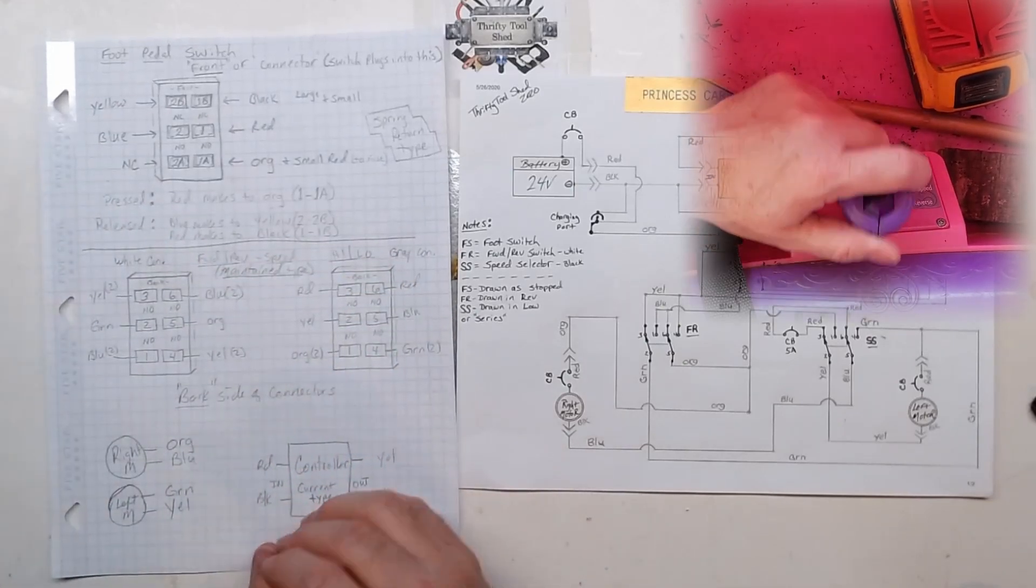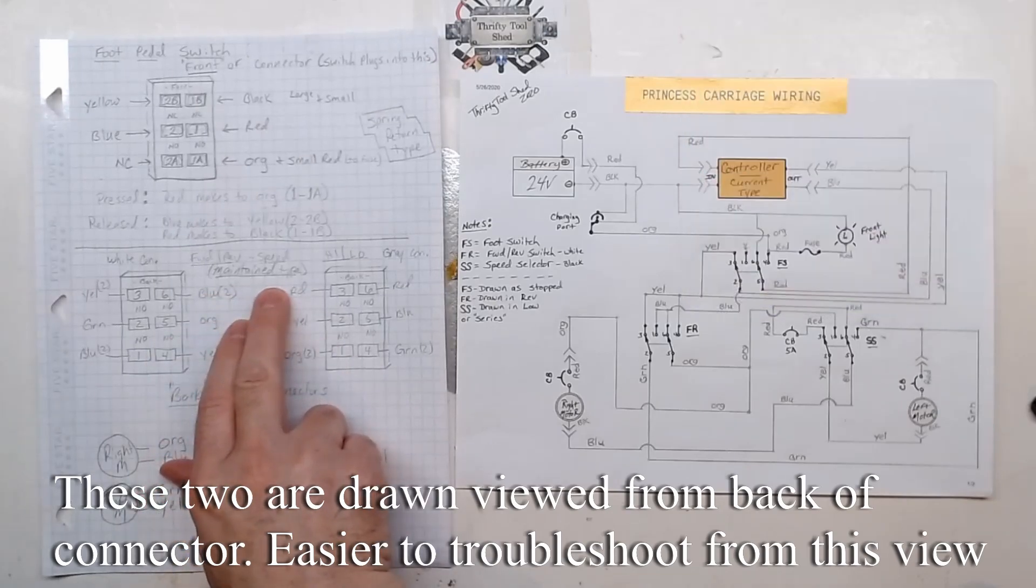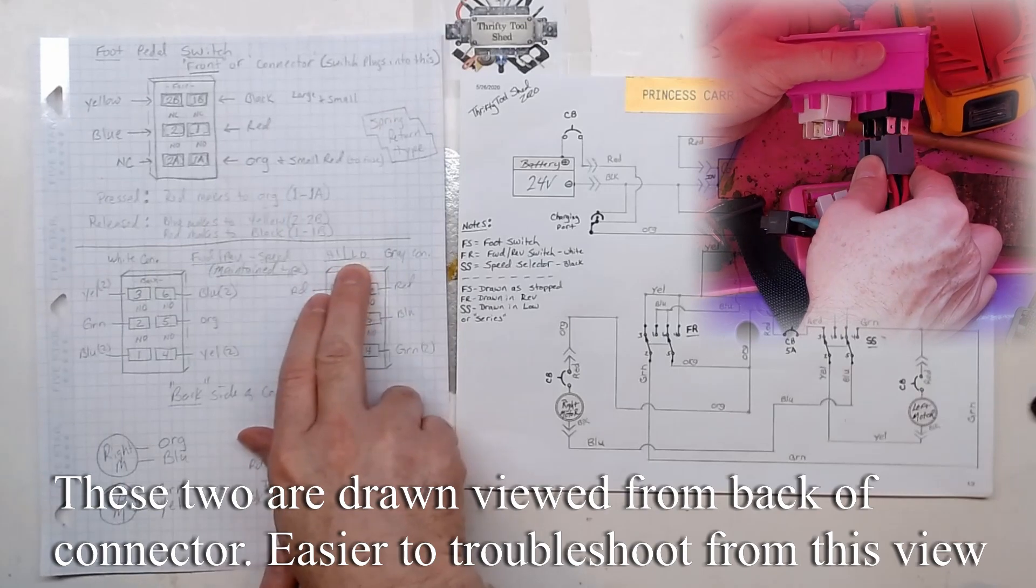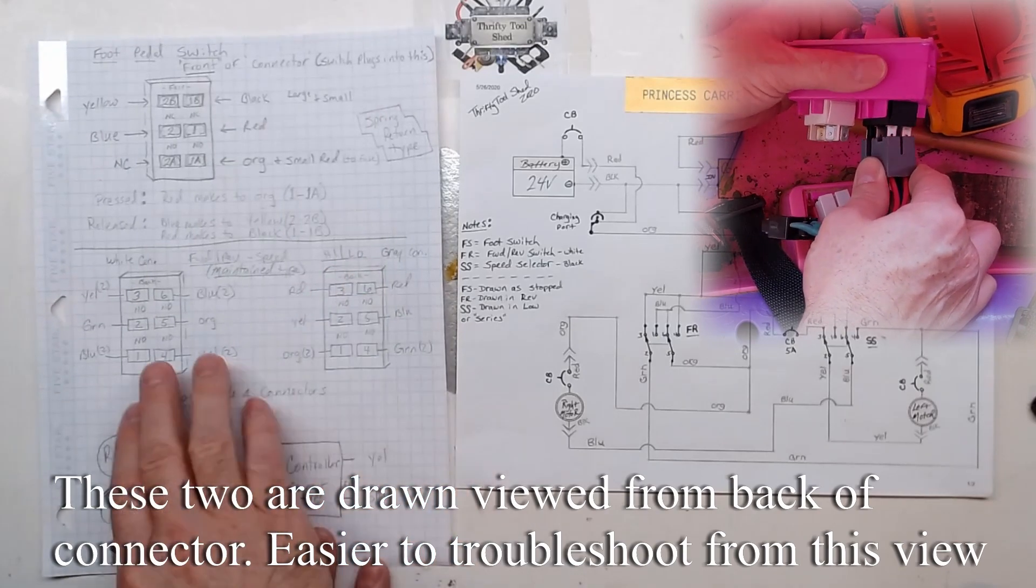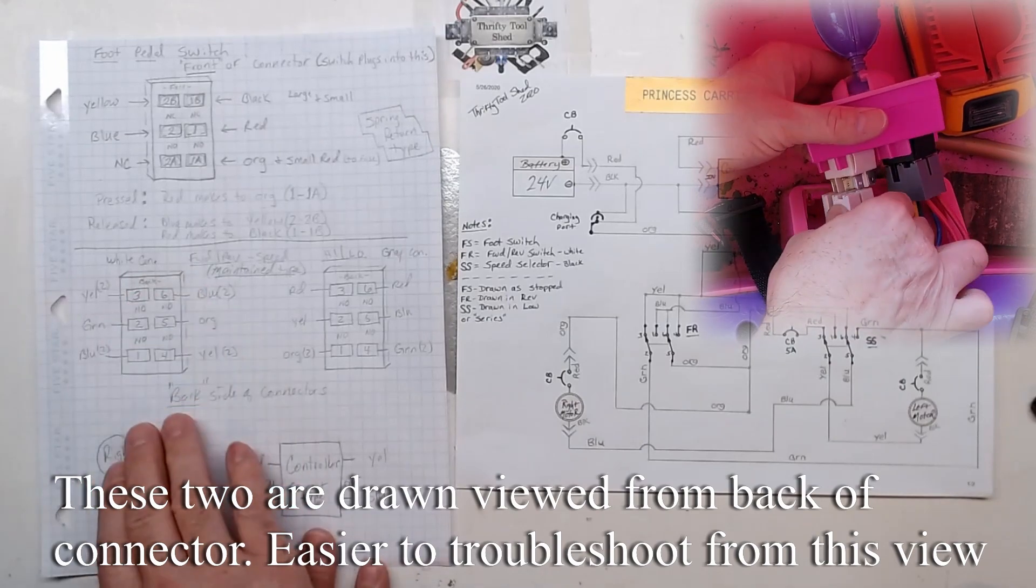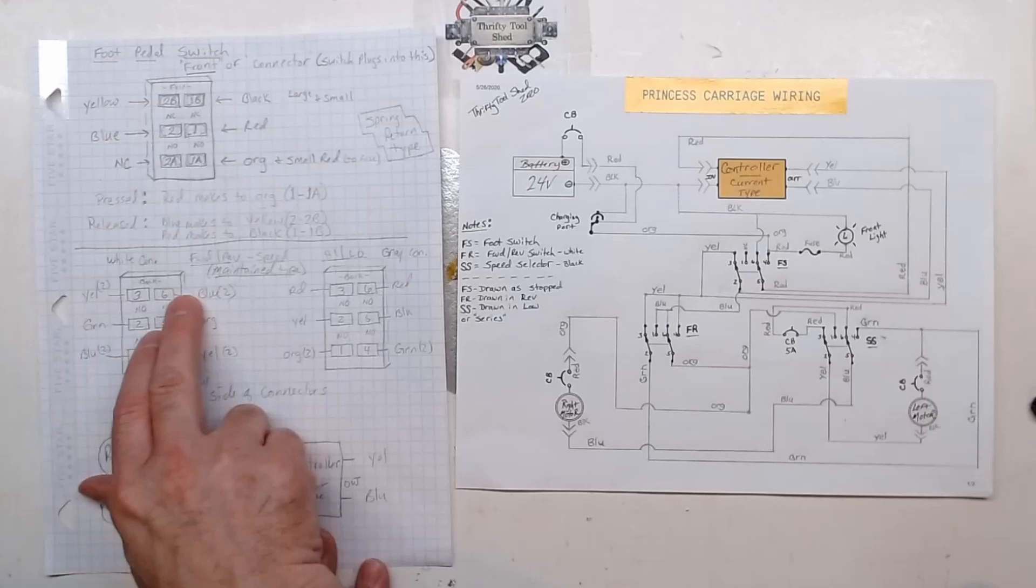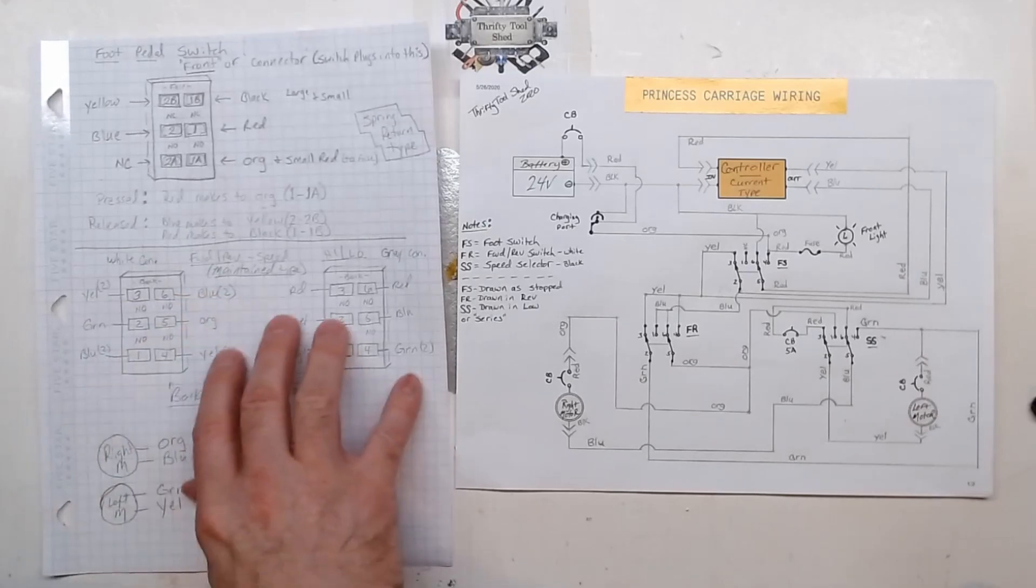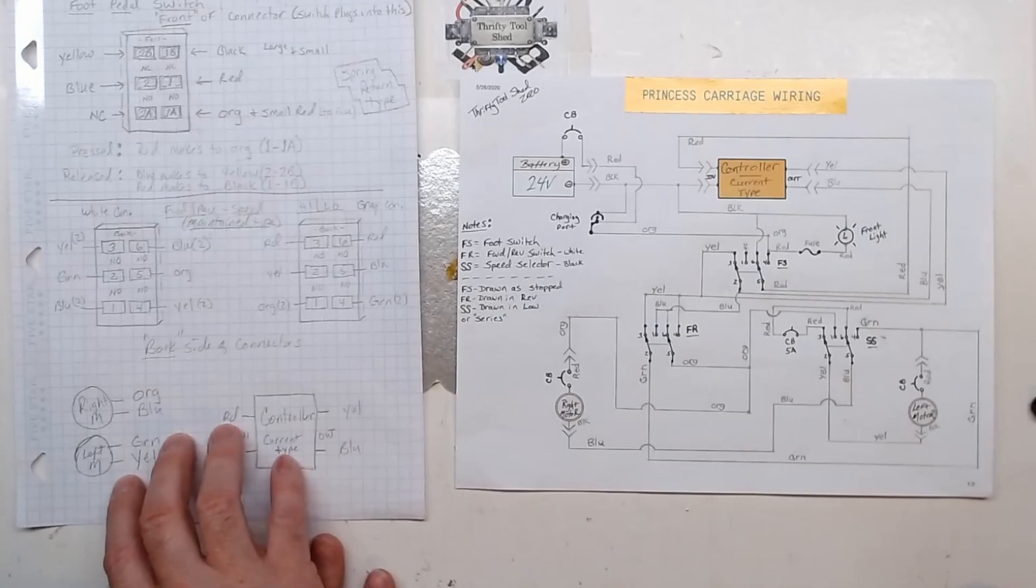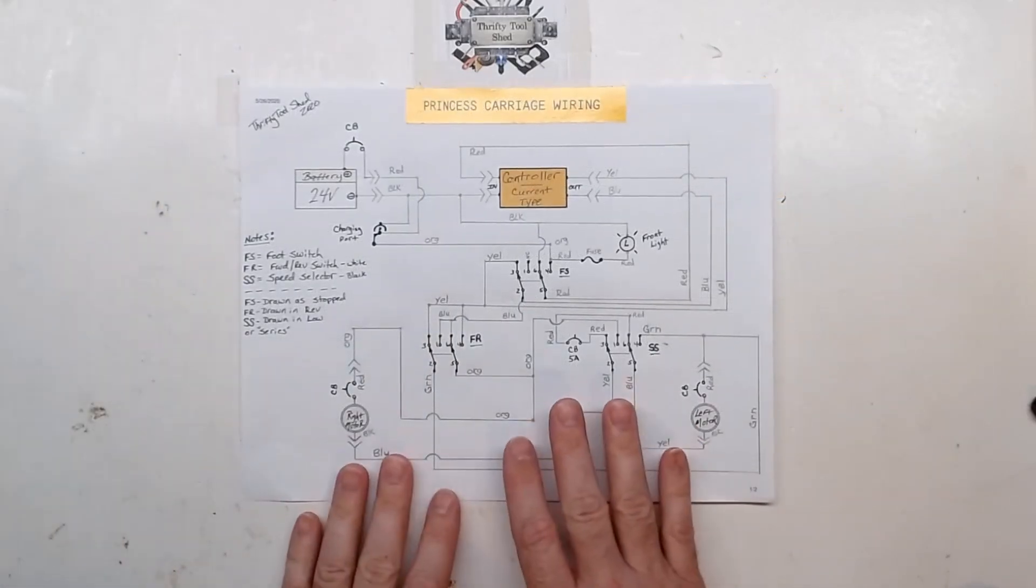The forward/reverse switches are maintained type that snap back and forth. The gray connector goes to the black switch for high/low speed selector, and the white connector goes to the forward/reverse switch. You can see the designation: two yellow wires, two blue wires, etc.